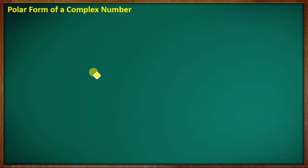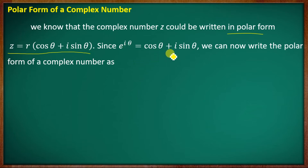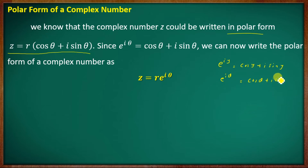The polar form of a complex number: we know that a complex number z can be written in polar form as z equal to r(cos θ + i sin θ). Since e raised to iθ equals cos θ plus i sin θ, we can now rewrite the polar form of a complex number as z equal to r into e raised to iθ. That's the polar form.